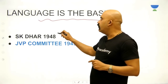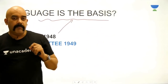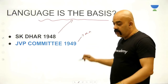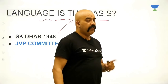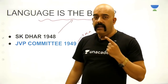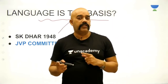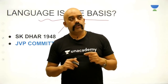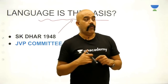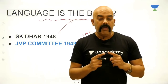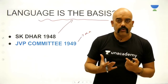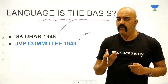Language emerged as a barrier and basis for reorganization. The JVB Committee was completely against using language as a criterion for dividing states. Mahatma Gandhi himself had written articles in favor of linguistic division, saying language-based division is not wrong. But after Partition and communal violence, the question became more complicated — would language-based division further fragment India? Many feared people would start thinking in terms of language rather than as Indians.